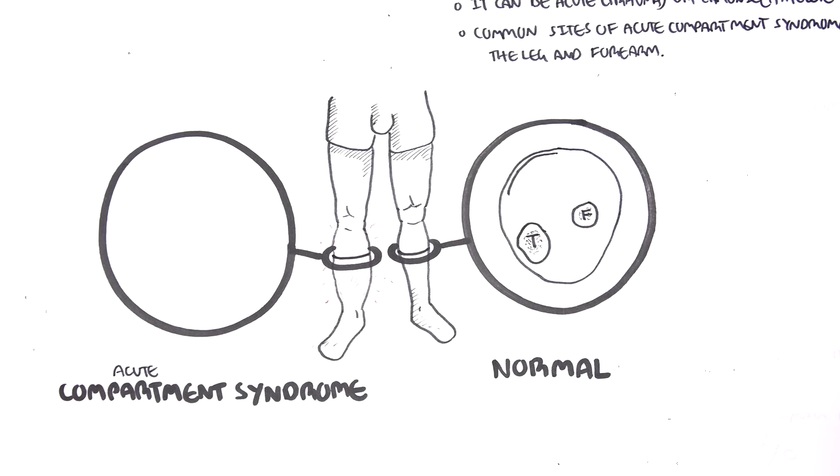Now the muscle compartments of the leg can be divided into four. We will not look at what the names of the muscles are within the compartments, we will mainly focus on the compartments themselves.